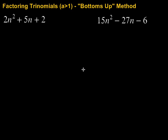In this video we're going to take a look at a method for factoring trinomials when the coefficient of the squared term is larger than 1. Oftentimes this method is referred to as the bottoms up method or also it's sometimes referred to as the AC method.